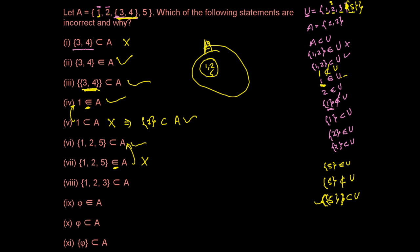Now consider: is {1, 2, 3} a subset of A? No. 1 is okay, 2 is okay, but what about 3? The element 3 is inside the curly bracket of {3, 4} — that entire {3, 4} together behaves as one member of A. You cannot break that curly bracket and take 3 out separately. You cannot extract the element, form a new set, and then say that set is a subset of A. You cannot do that.